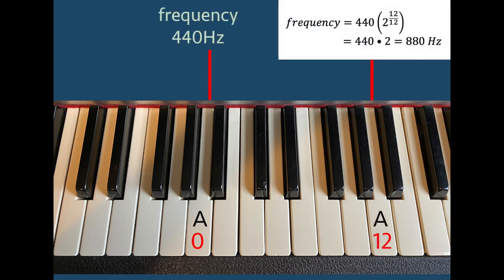First, the A an octave above A equal 440 Hz has note number 12. By the formula, the frequency is 440 times 2 raised to the power 12 divided by 12, which is equal to 440 times 2, which is 880 Hz.